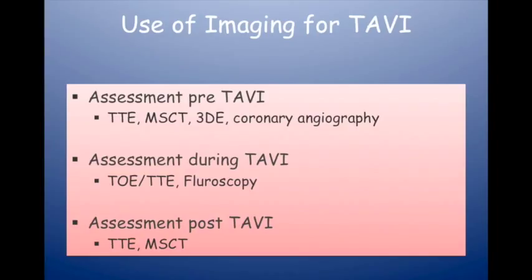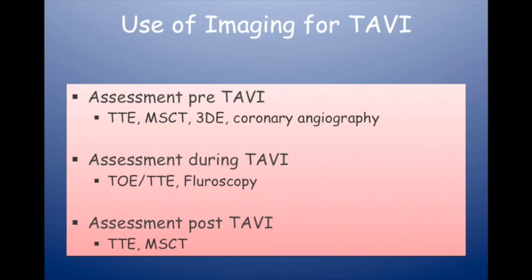MRI — cardiac MRI — is probably also important, as it will show fibrosis on late gadolinium enhancement, which has prognostic value. We divide the assessment of TAVI patients into pre-procedure, the procedure itself, and assessment after the valve has gone in. Pre-procedure assessment is mainly transthoracic echocardiography, multi-slice CT, and coronary angiography. In some units, 3D TOE is used to size the aortic annulus.